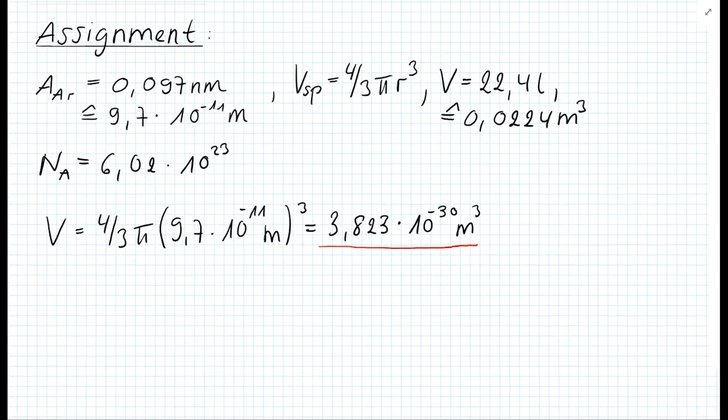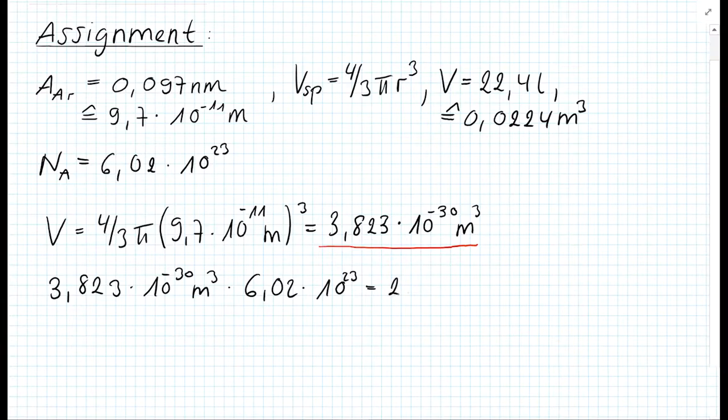Knowing this, we can now calculate the space that an argon atom occupies in a sample of neon. Because we know the number of neon atoms in this volume is equal to Avogadro's number, we have to multiply the calculated volume of the argon atom with Avogadro's number. This gives us 2.3 × 10⁻⁶ cubic meters, which are 0.0023 liters. What we have now is the space occupied by the argon atoms.